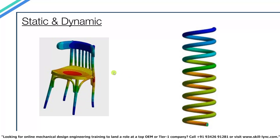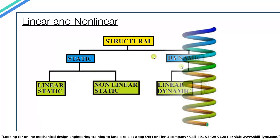A good example for static analysis would be the simulation of a load on a chair. In dynamic analysis the system, the load applied, or both might change with time — a good example being the simulation of a spring's compression. Depending on the requirement, one may choose to go with either static or dynamic analysis.